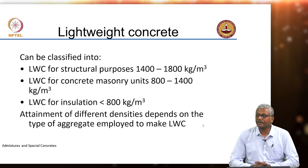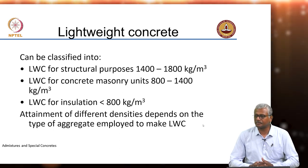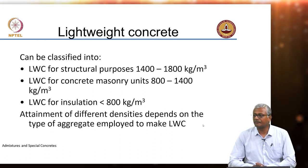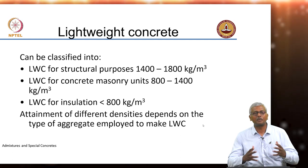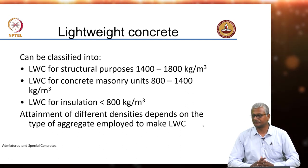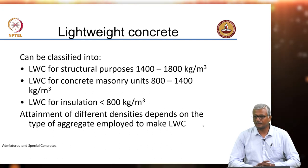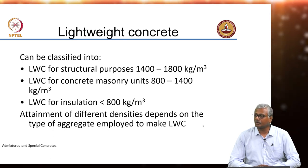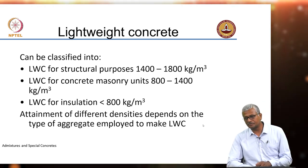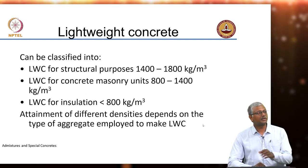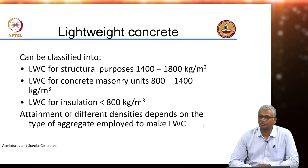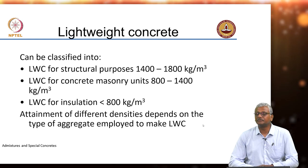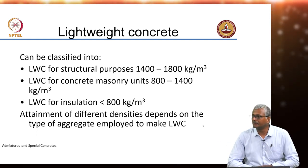Lightweight aggregate concrete can be used for several purposes. For structural purposes we need densities on the higher side; otherwise we will not be able to make concrete that is strong enough. But for masonry units — lightweight blocks, for instance — you can use densities of 800 to 1400. When trying to get only insulation from lightweight materials, you can go for densities even lower than 800 kilograms per cubic meter.